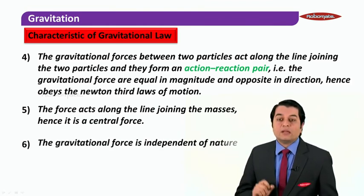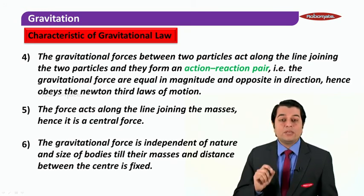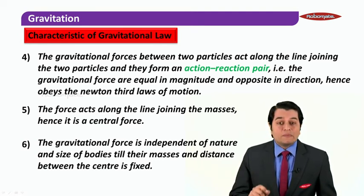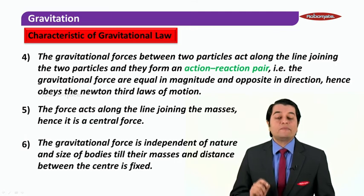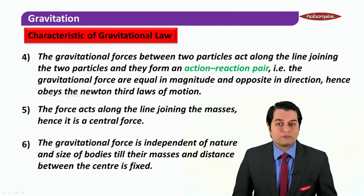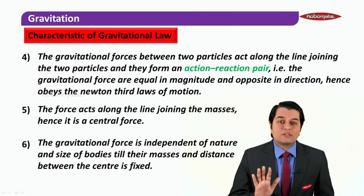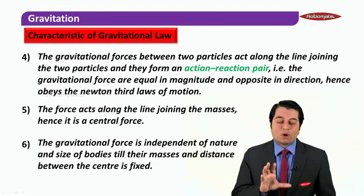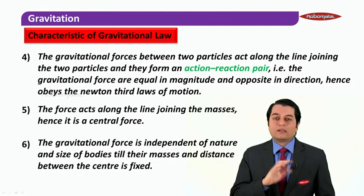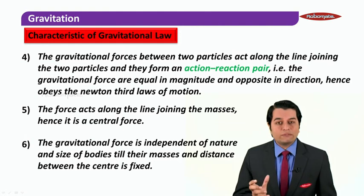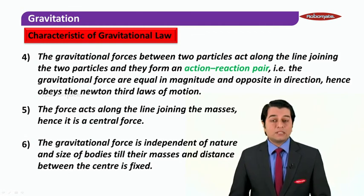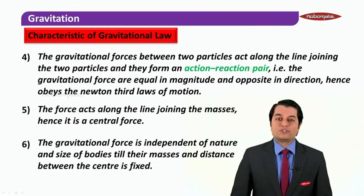The sixth very important characteristic of the gravitational law is that the gravitational force is independent of the nature and size of the bodies, as long as their masses and distance between them are fixed. Whether the mass is rectangular or spherical, it does not matter — gravitational force only depends on the amount of mass and the distance between the centers of the two masses. These are the very important significance of the gravitational law.